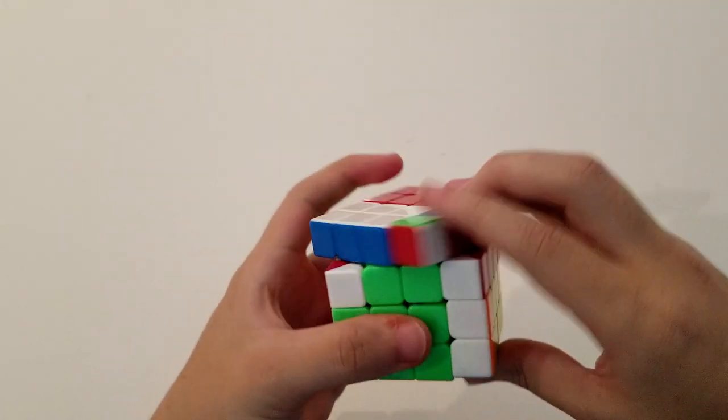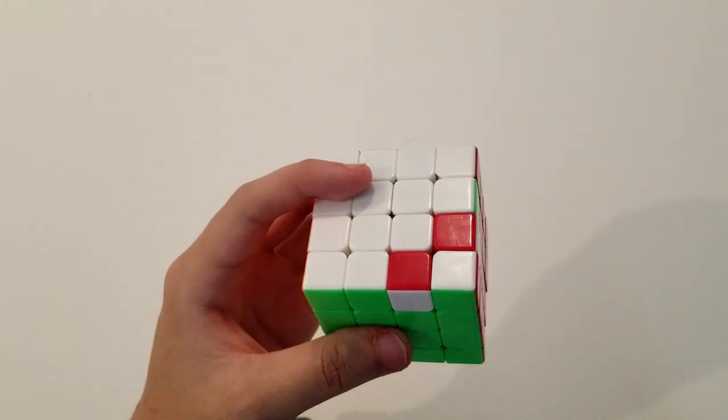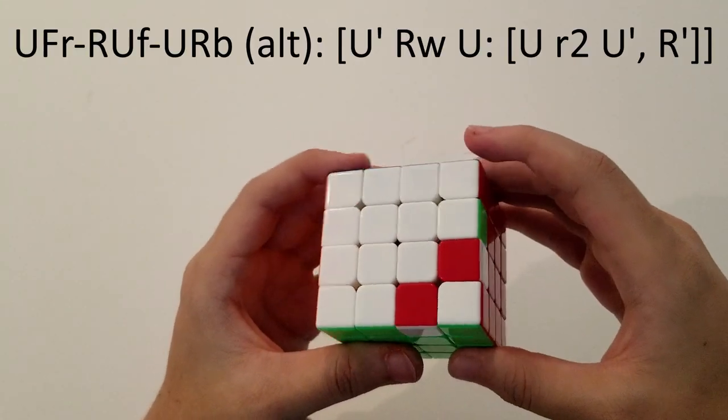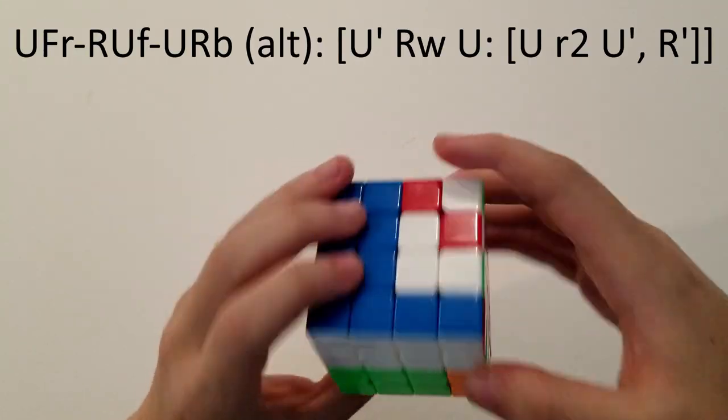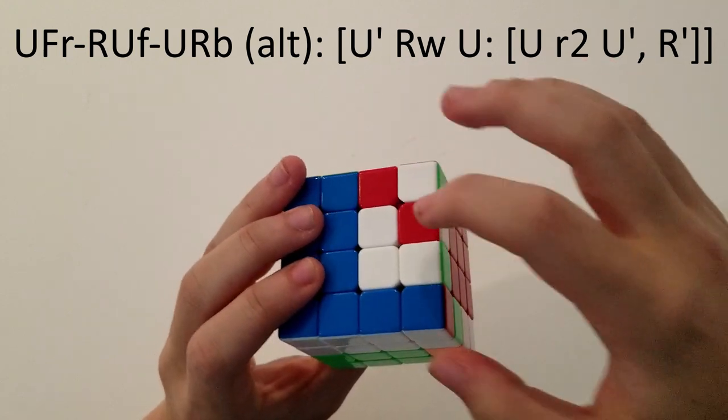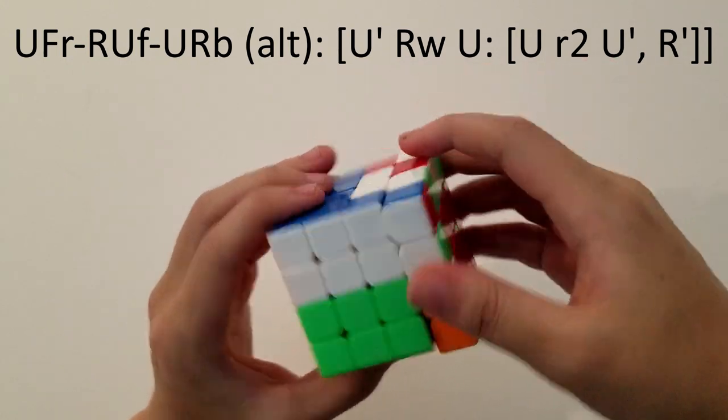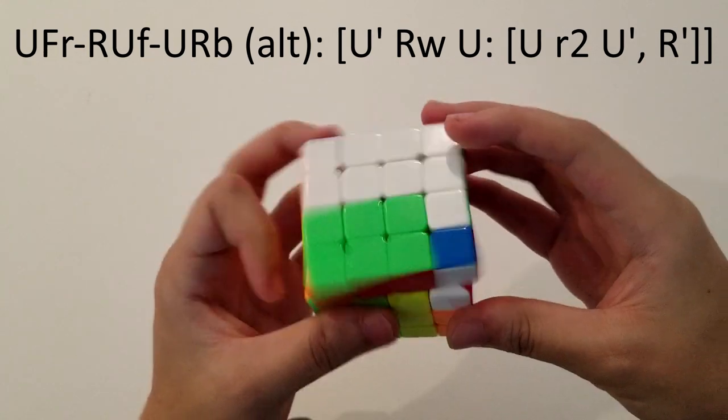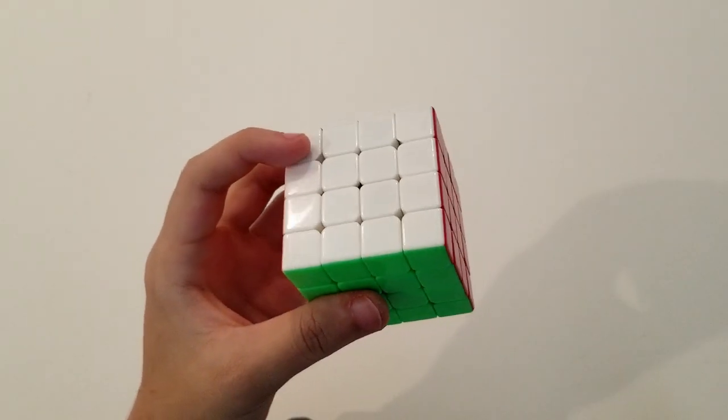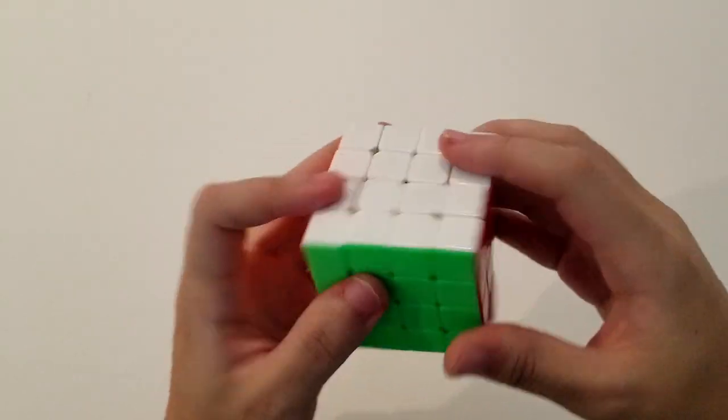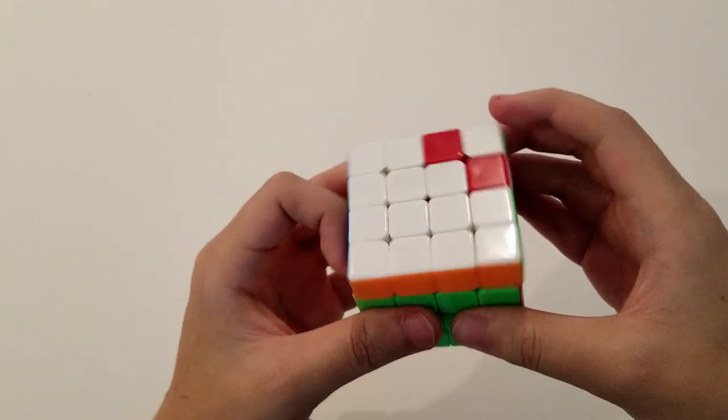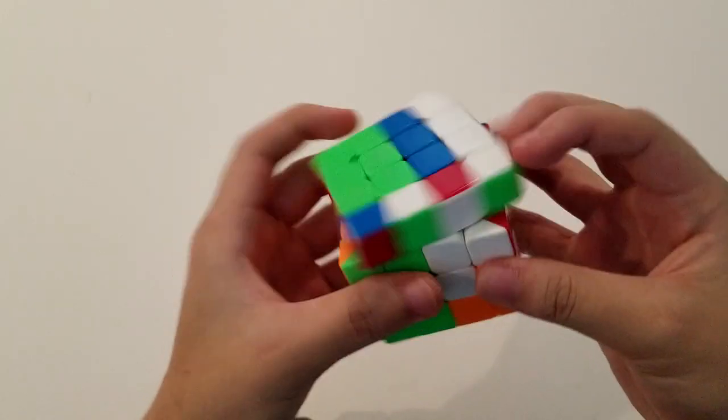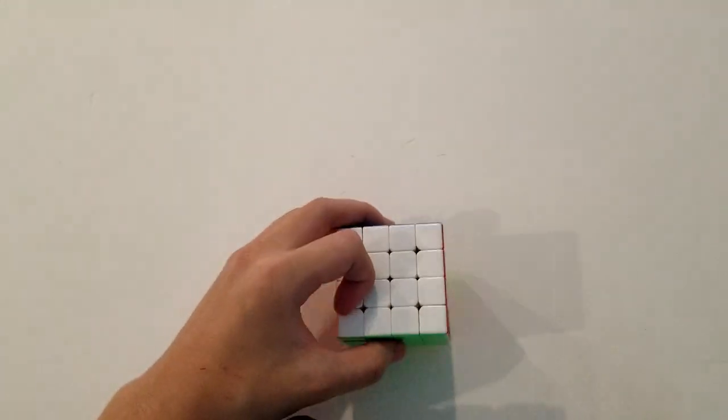And the last alg that I think is viable, if it works for you, is U-prime, R-wide, U. We have one piece back here, and then these two are interchangeable with R-prime. So, we can do like that. To show you that one more time, U-prime, R-wide, U, just like that.